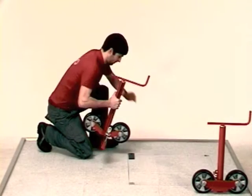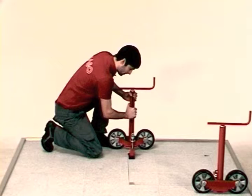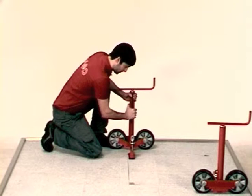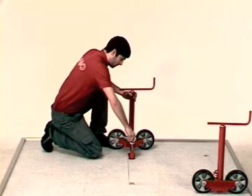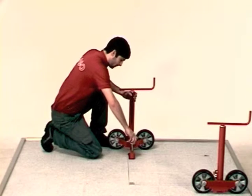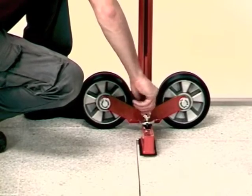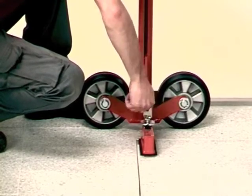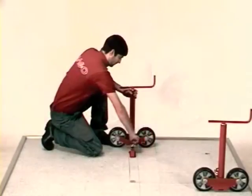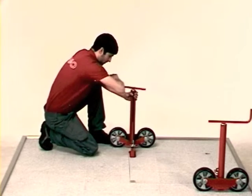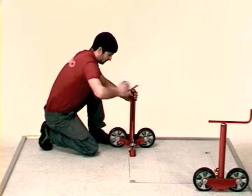The handling becomes child's play. The red lifting units are attached with the delivered fixing screws to the manhole cover. Then simply operate the crank and the manhole cover will be lifted.